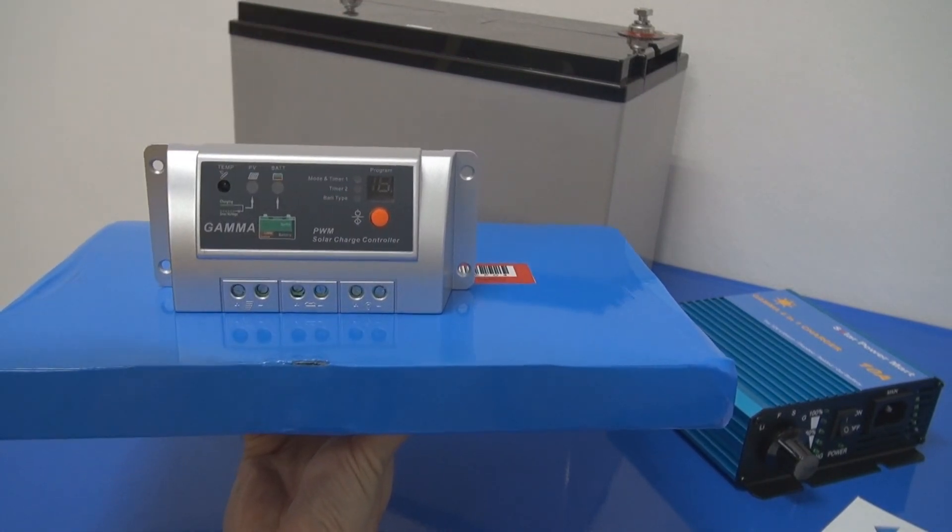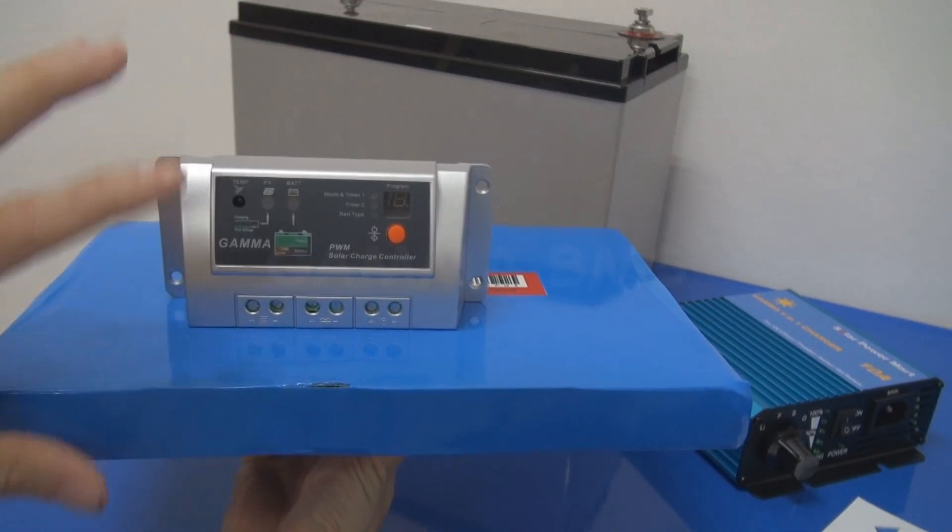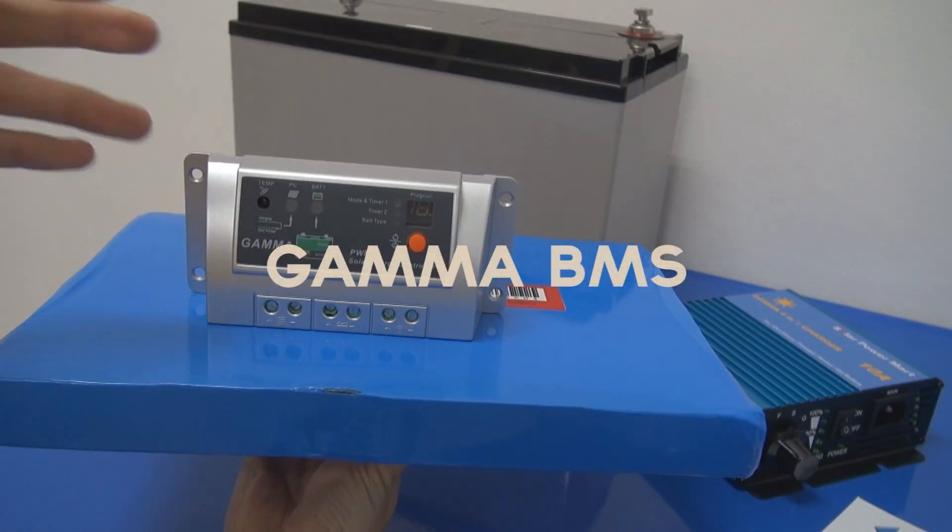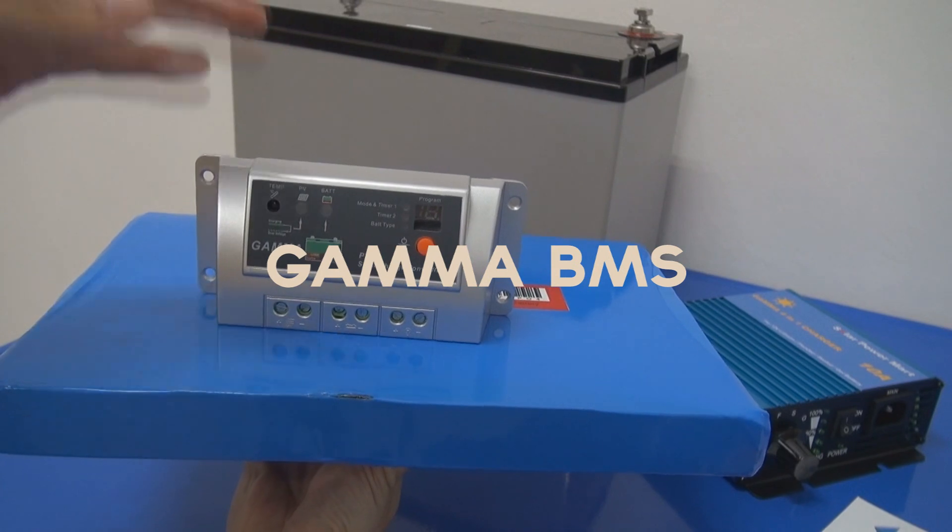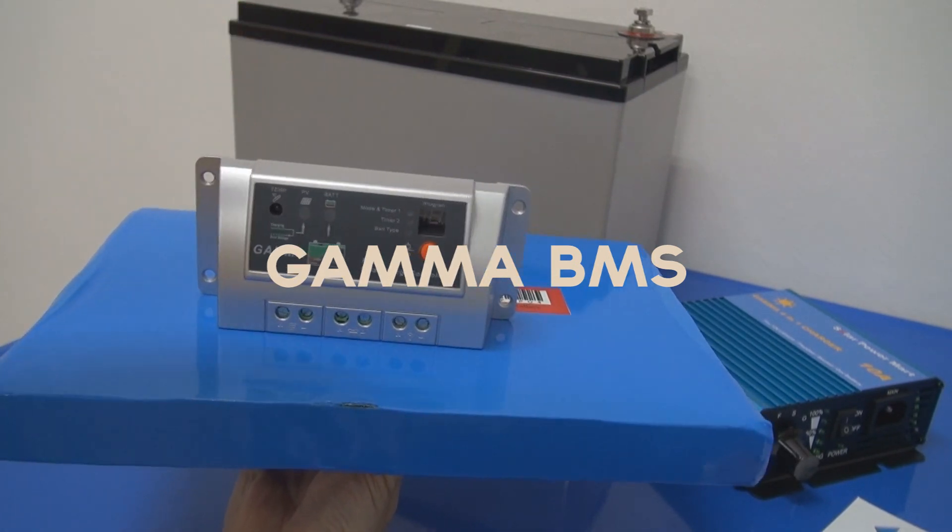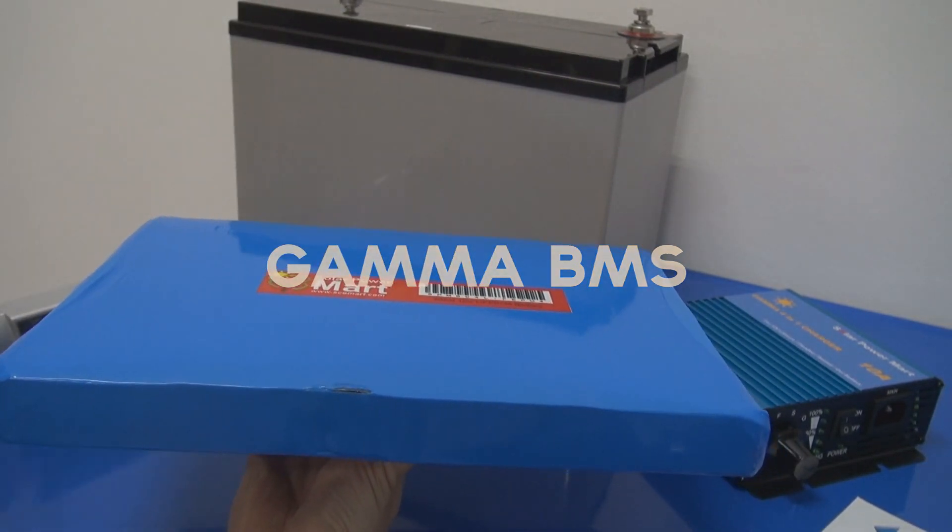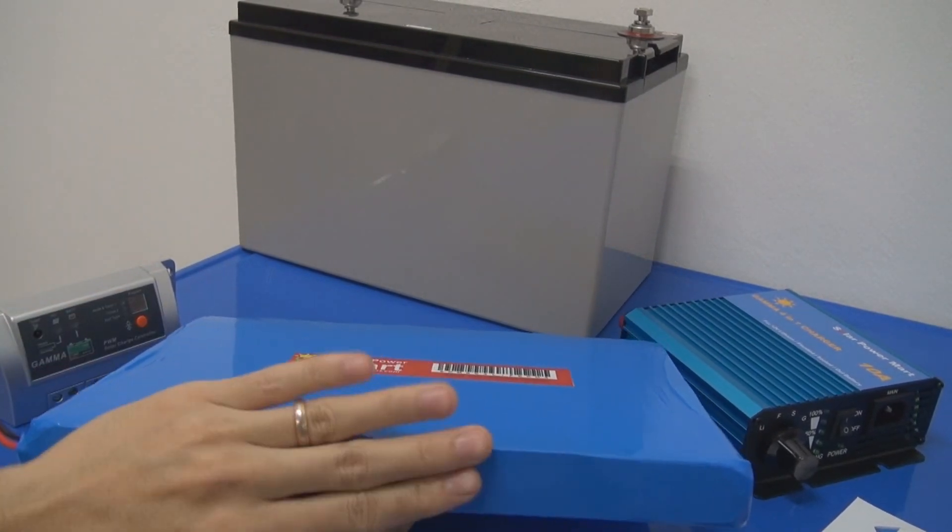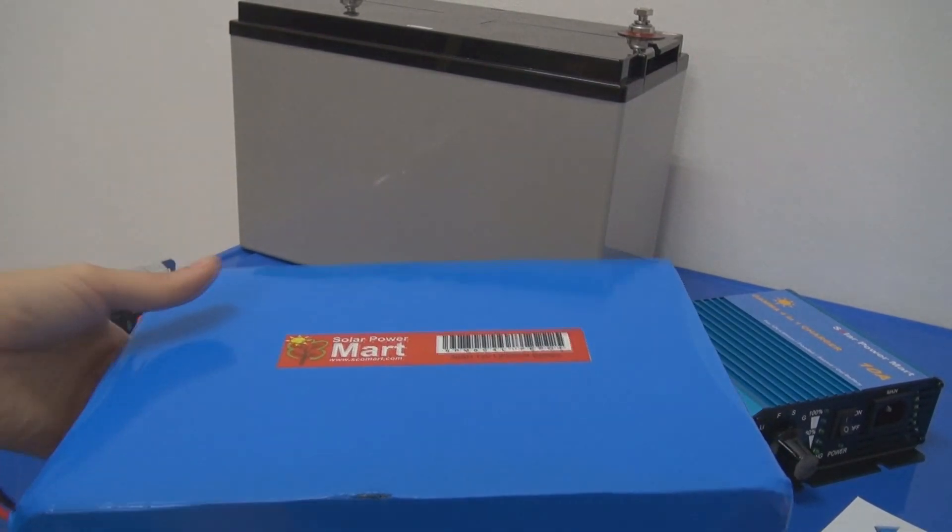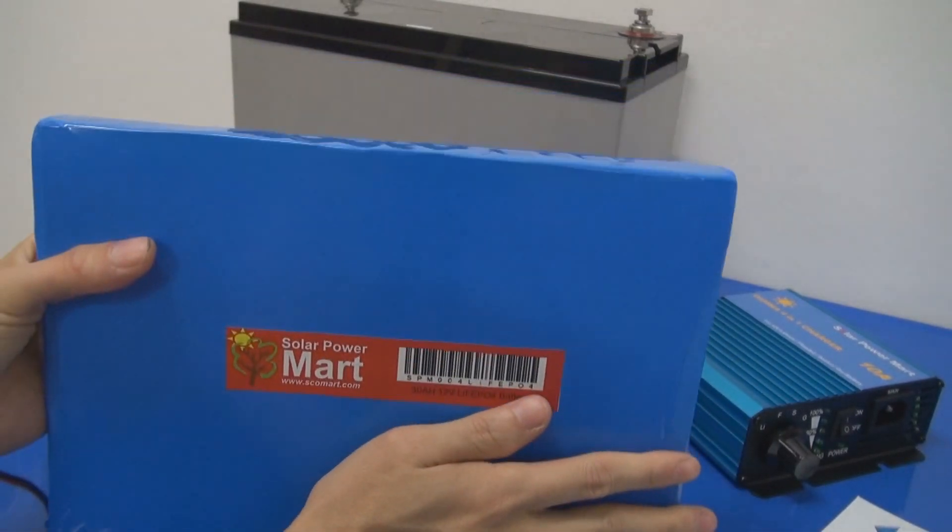Actually, basically, we use the Gamma BMS. In other words, it's the Gamma controller. Because the Gamma is well-accepted, very good, and very reliable, we build our BMS based on the Gamma technology. In other words, this is basically a Gamma BMS embedded, built-in, in the battery to protect your battery.